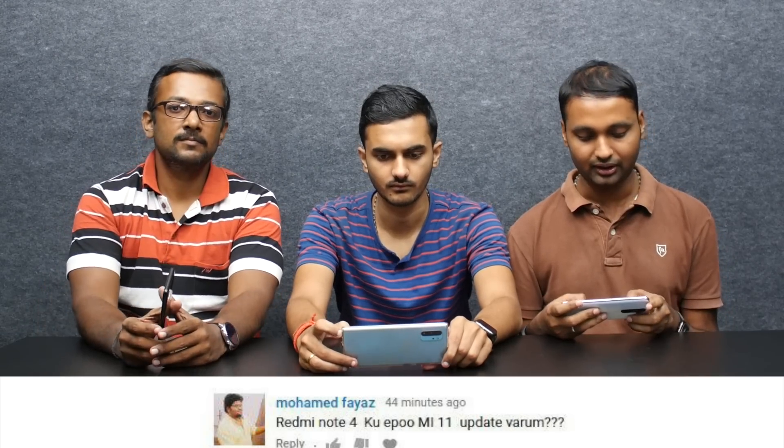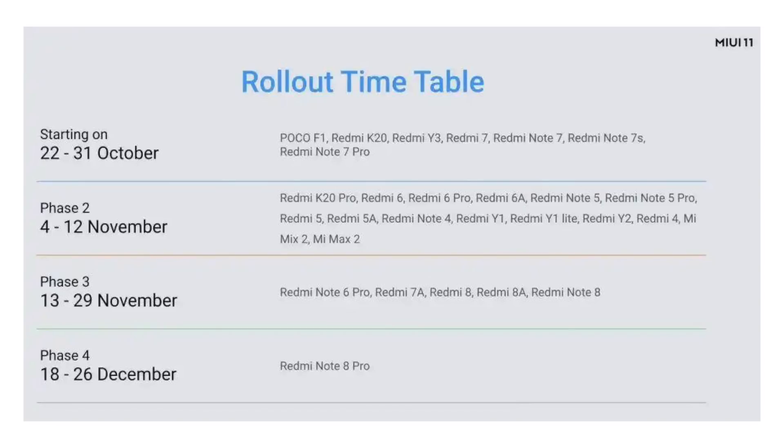We talked about the K20 update in the first or second week. Now we have an update in K20 — they said it was scheduled for October 22-31. We can update all phones. There will be a timetable released for the beta and stable updates. We are stable. If you have any comments, send them in. This is Vigneshwar — have a nice day.